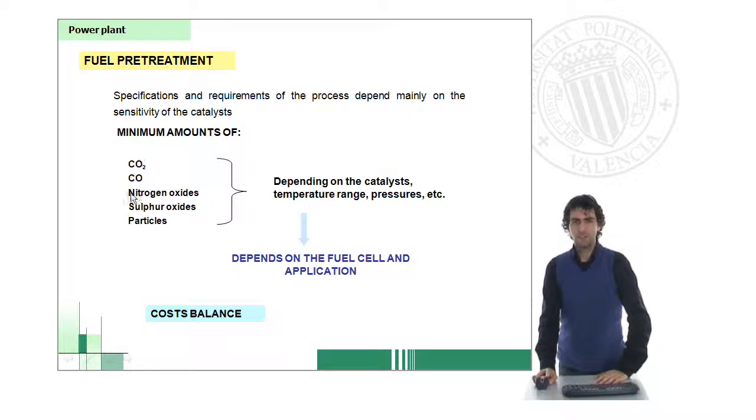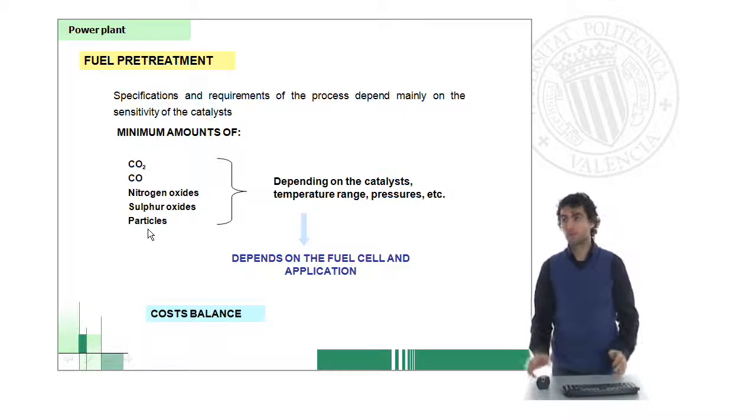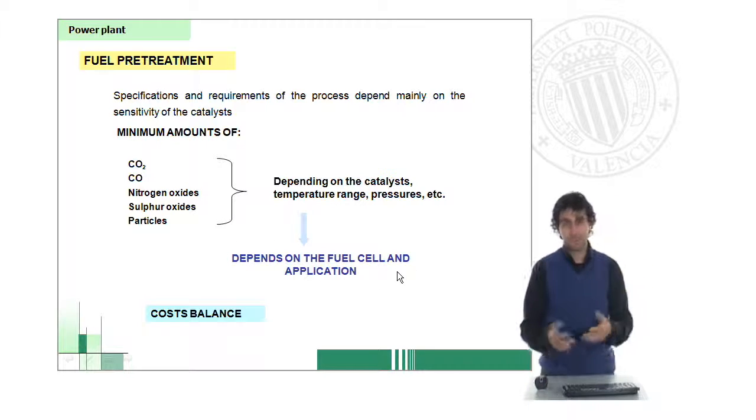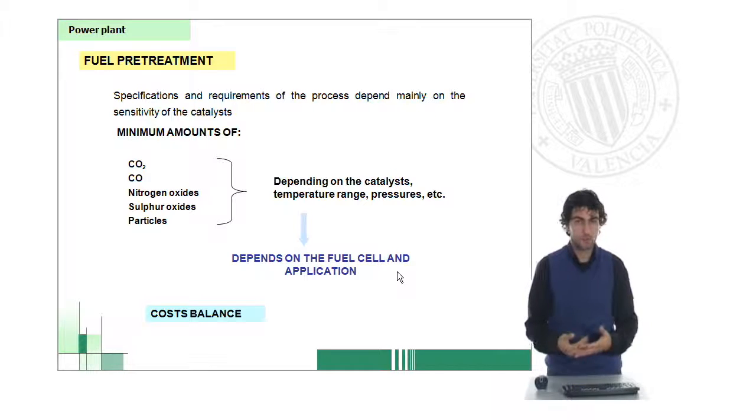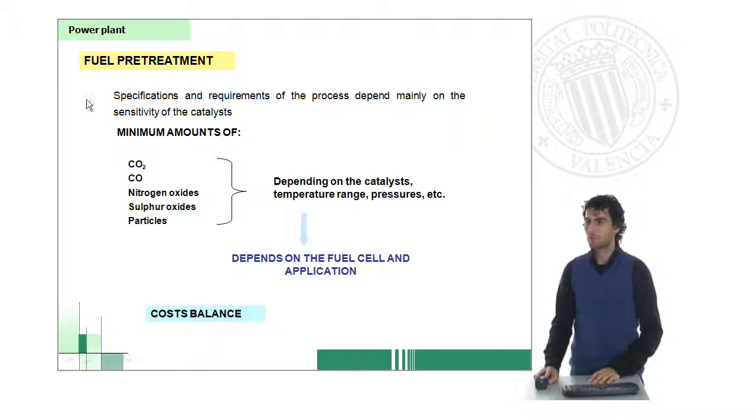We need to get rid of all these things before we can use the fuel stream into the anode. Basically carbon oxide and dioxide, sulfur oxides, nitrogen oxides, and even some carbon particles which can poison the catalysts and even electrolytes. Depending on the temperature and the fuel cell that we use, the requirements of purity of these components will be one or another.